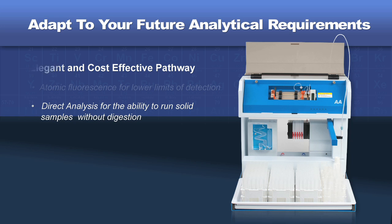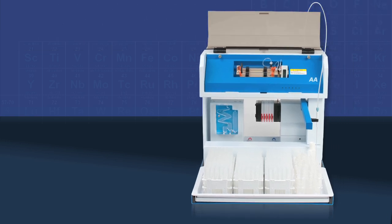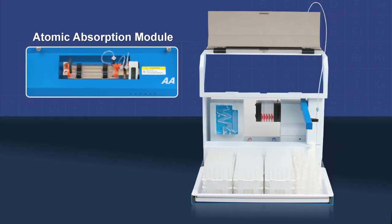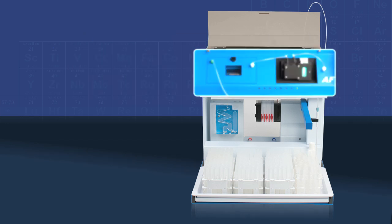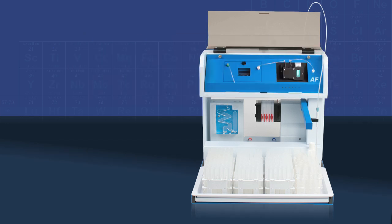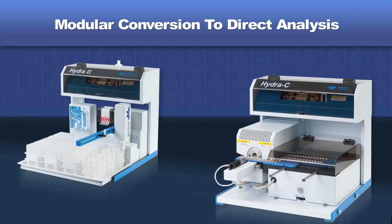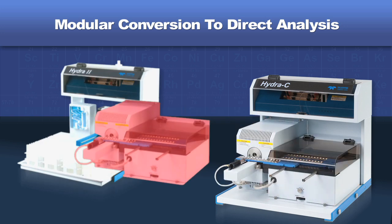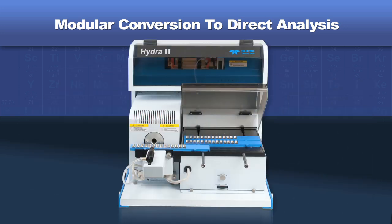The transition to atomic fluorescence involves simply replacing the atomic absorption module with the atomic fluorescence module. Similarly, for people who run into difficult-to-digest samples or prefer to avoid some sample digestions, Lehman Labs provides a modular conversion to direct analysis by thermal decomposition.